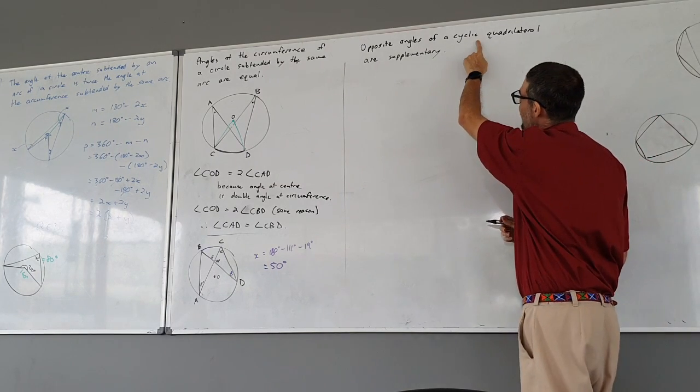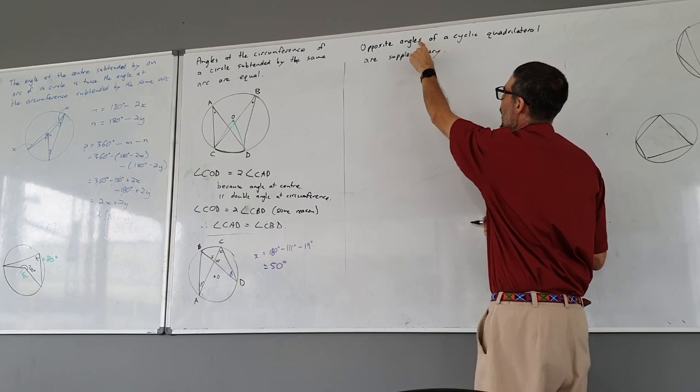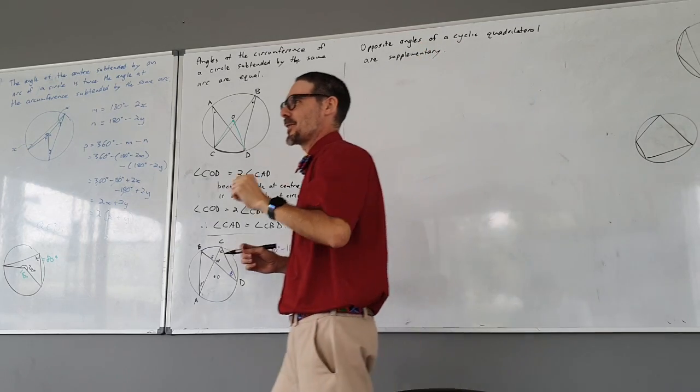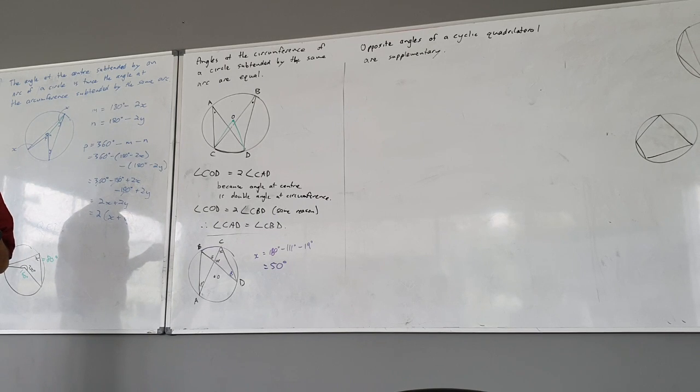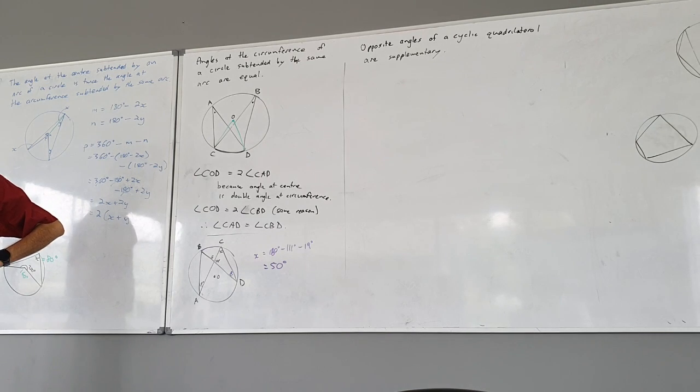If you have a cyclic quadrilateral, the opposite angles are supplementary. I wrote that word yesterday. What does supplementary mean? Olivia, did you write it down? Okay, we found it. Go on, Eddie. They add up to 180 degrees.